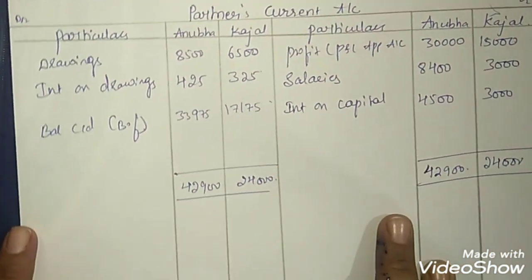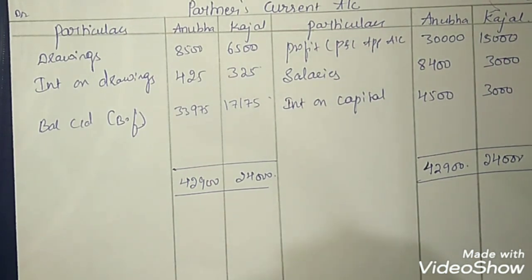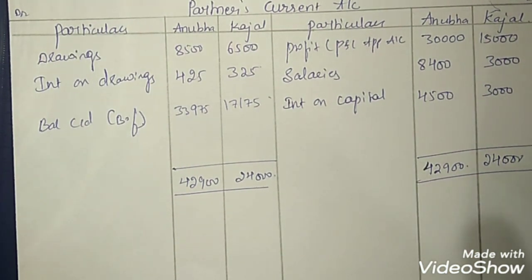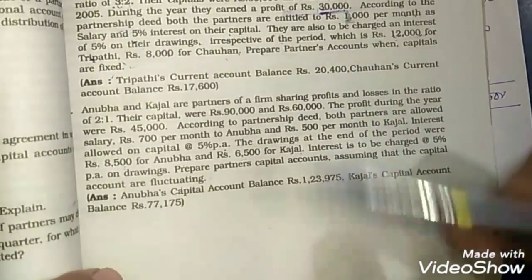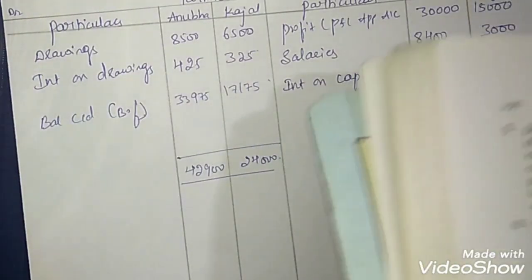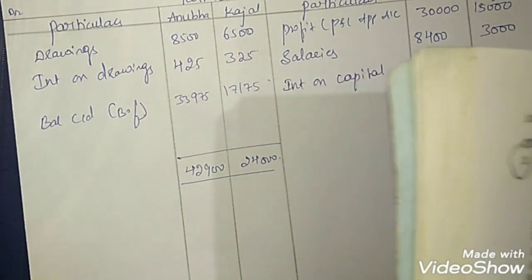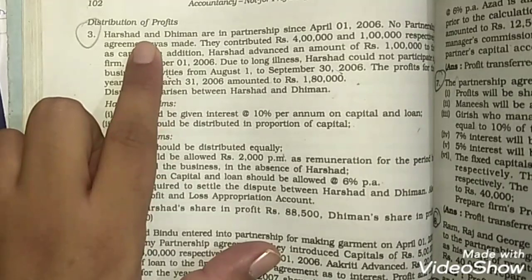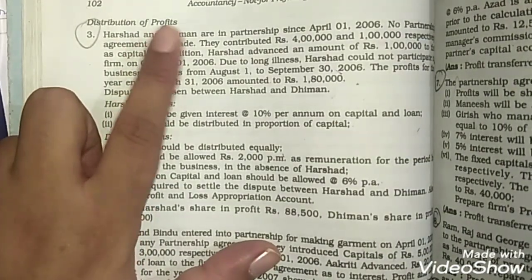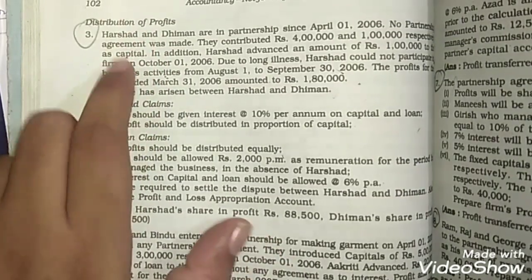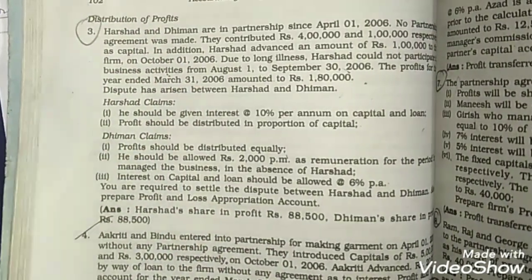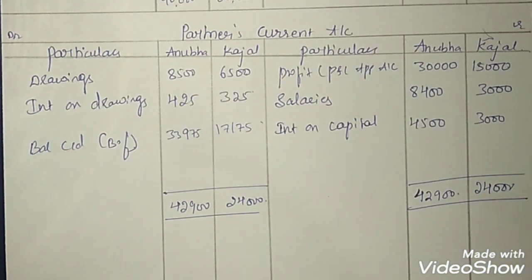No matter which method a question is given in — fluctuating or fixed — you are now ready to solve it in both methods. Only two questions are given in your textbook relating to partners capital account. The next topic in your textbook is distribution of profits, which is the profit and loss appropriation account. In the next practice session, we are going to solve those problems. Do watch the next session as well. Thanks for watching.